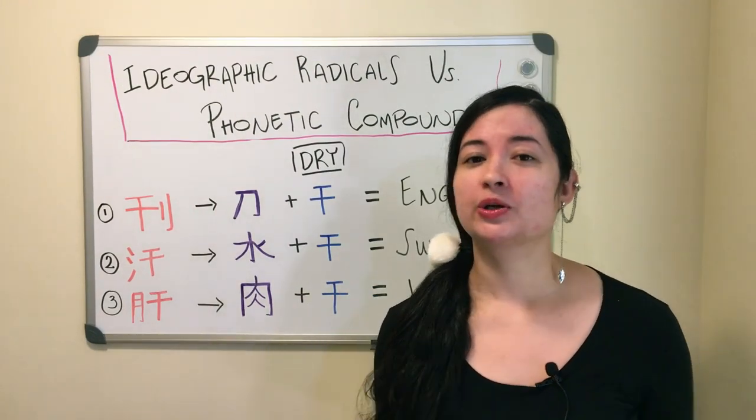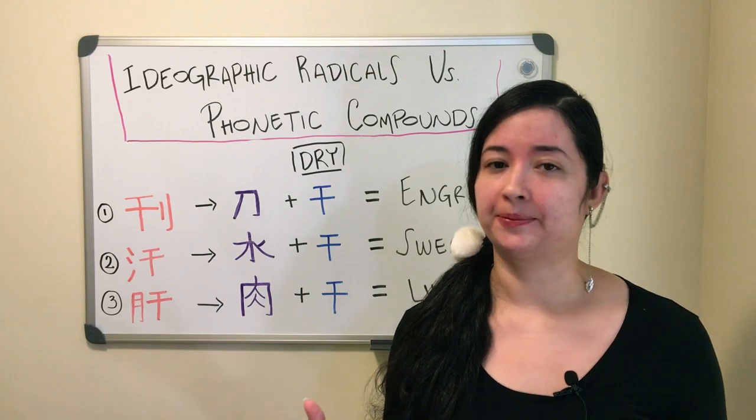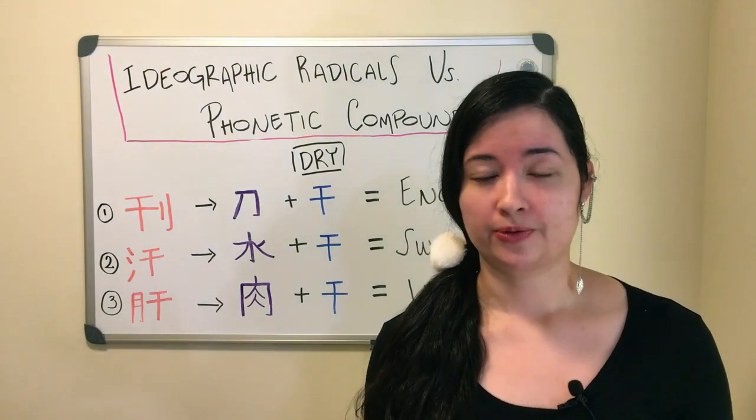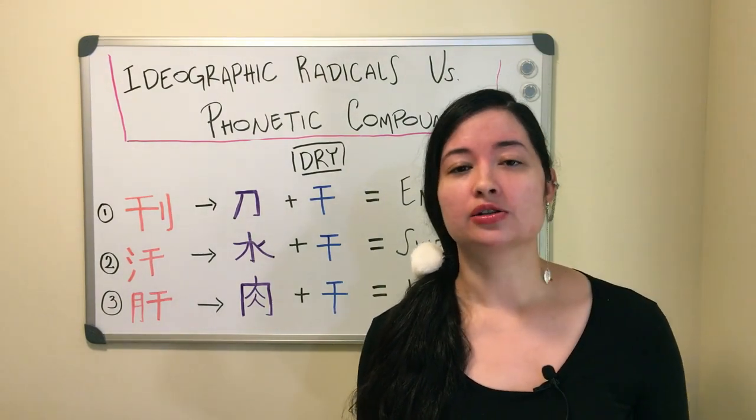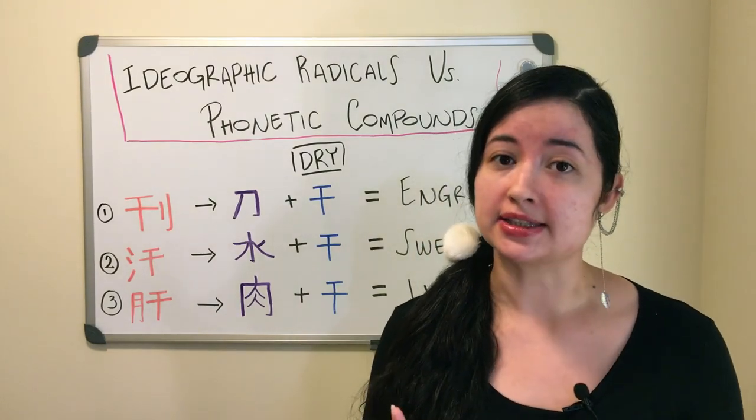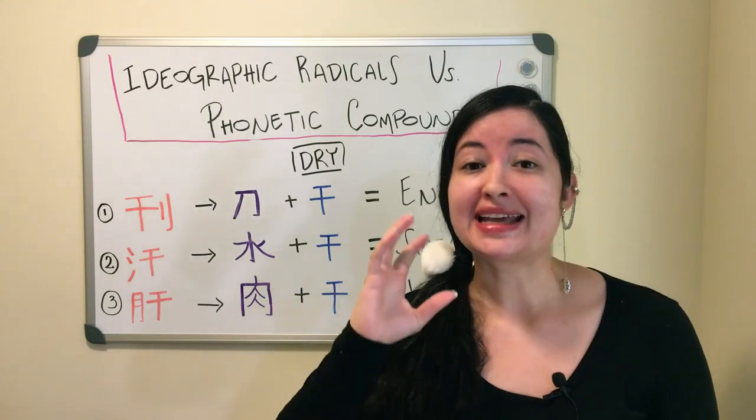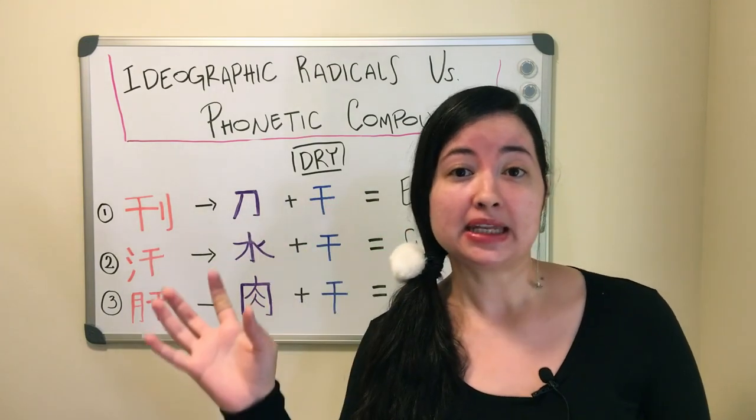I'm pretty sure you're wondering what Ideographic Radical and Phonetic Compound mean. Let's start with Ideographic Radical. These are the type of radicals that will help you determine what the meaning of the kanji is. It will lay out a picture or an idea of what the meaning might be.